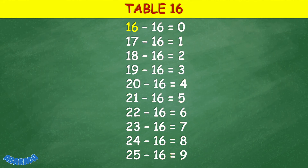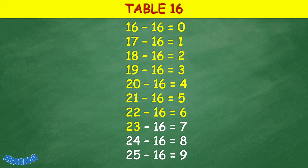Table 16: 16 minus 16 equals 0, 16 minus 16 equals 10, 17 minus 16 equals 1, 18 minus 16 equals 2, 19 minus 16 equals 3, 20 minus 16 equals 4, 21 minus 16 equals 5, 22 minus 16 equals 6, 23 minus 16 equals 7, 24 minus 16 equals 8, 25 minus 16 equals 9.